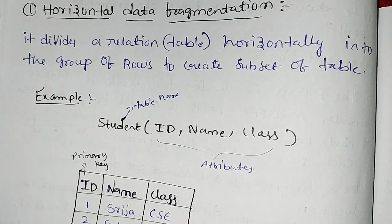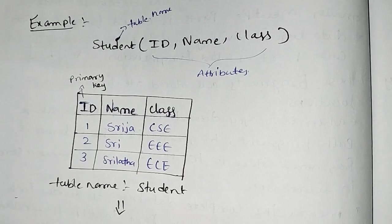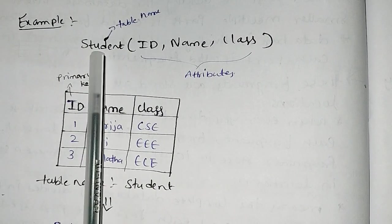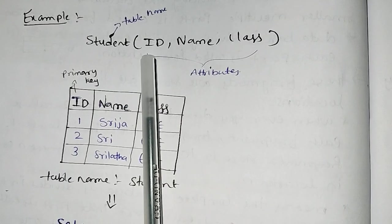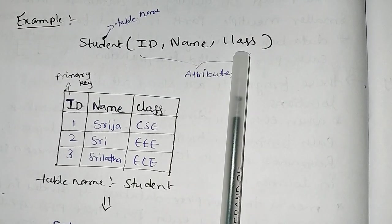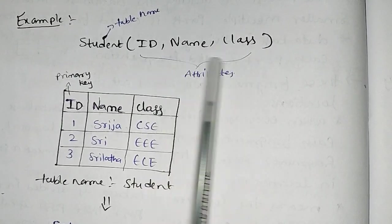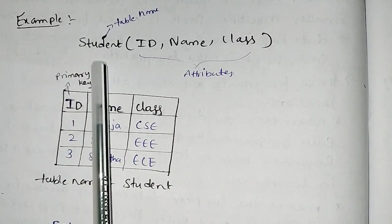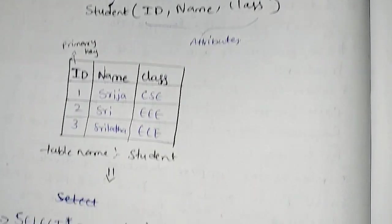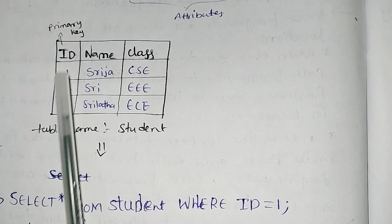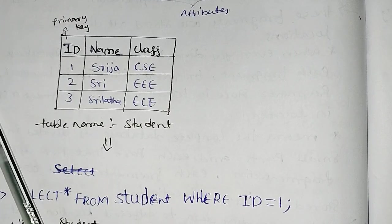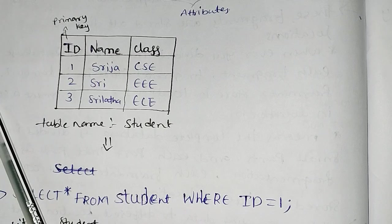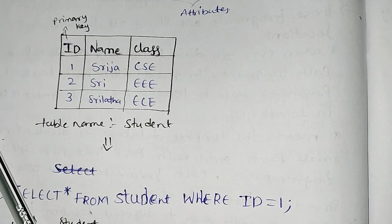Now let me look at the example. The table name is student. Then the attributes — the columns — are name, class. These are the attributes of the student table. The ID is the primary key. ID numbers are unique, and the student ID is unique.